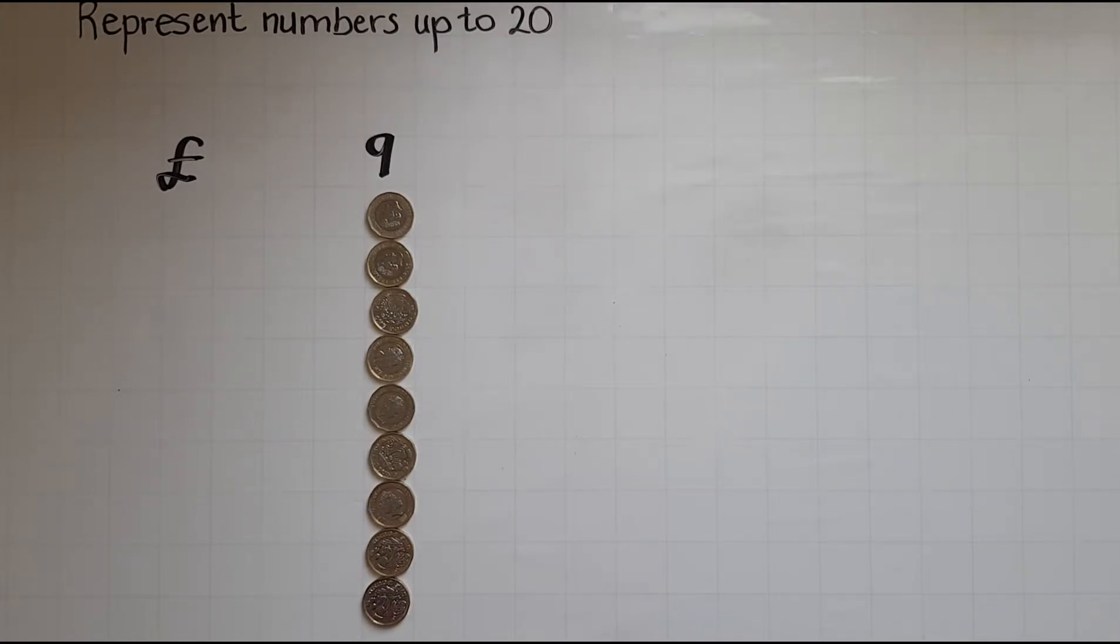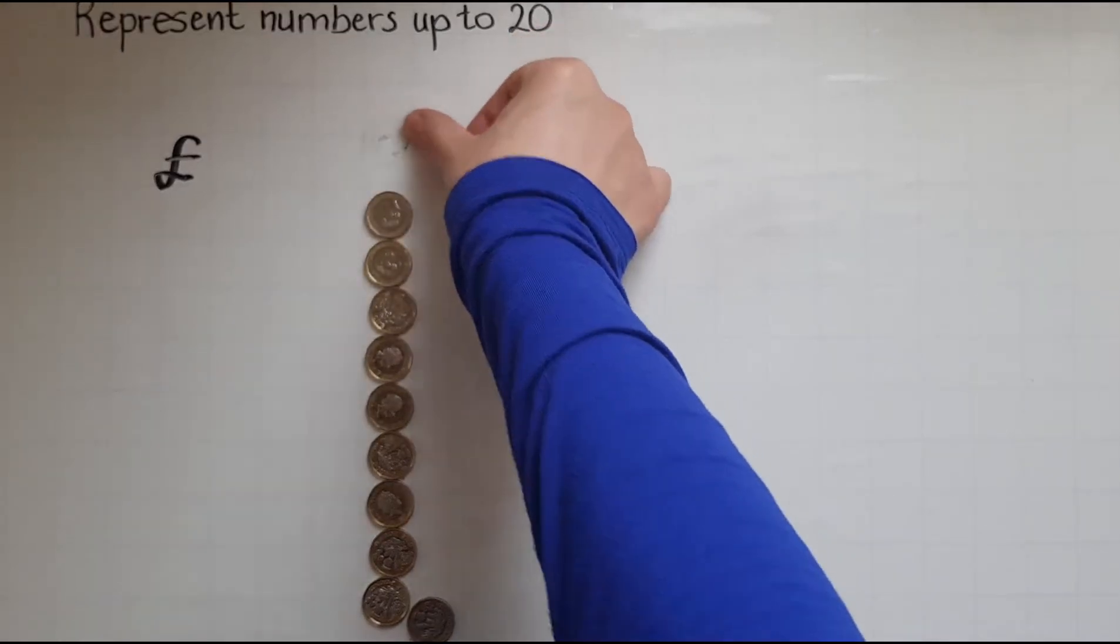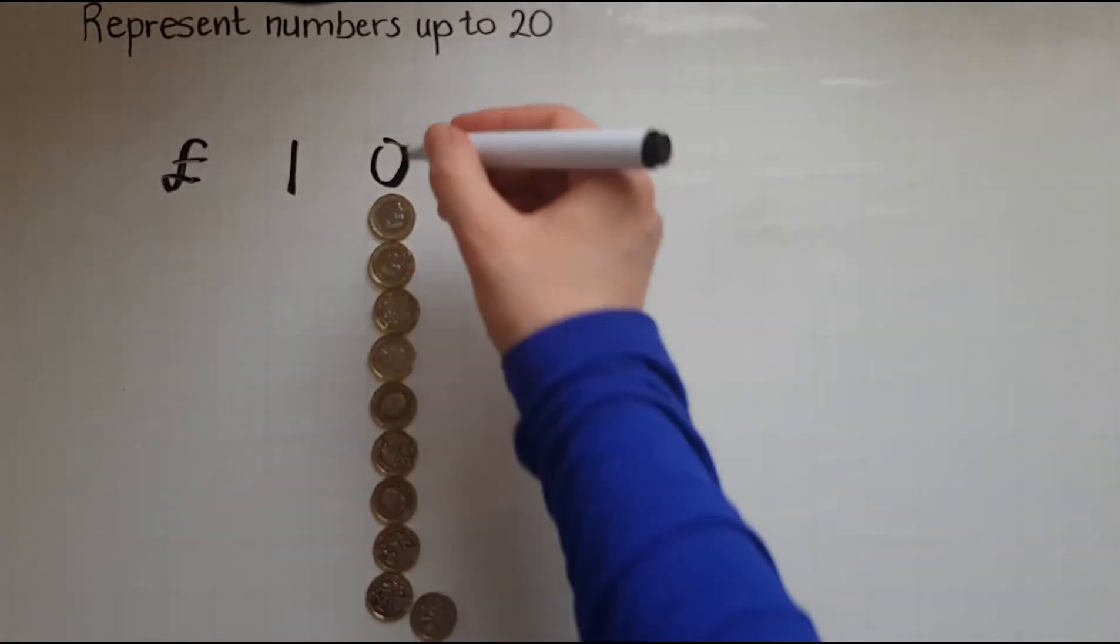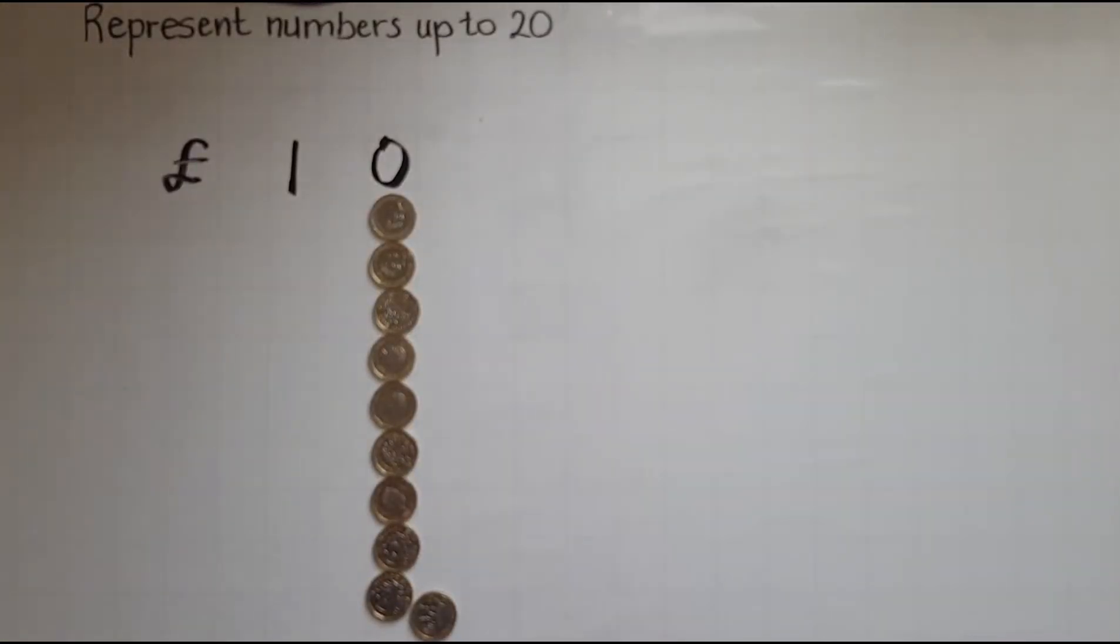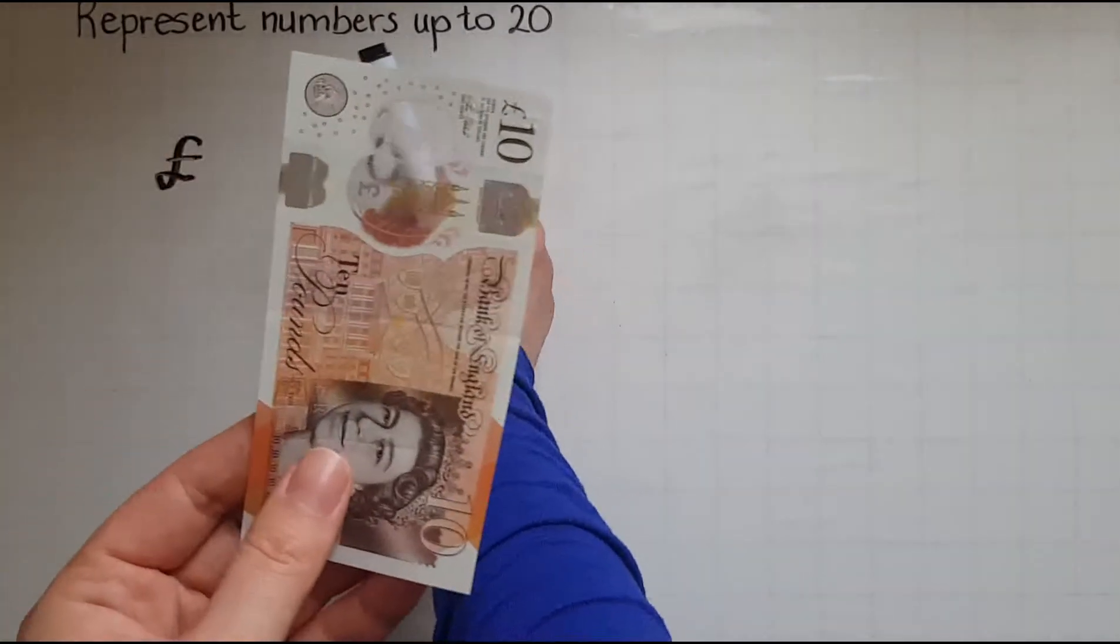If I have ten pounds, which is what I have now, how would I write this? What would I do? I would put them together, collect them together and exchange them for a ten pound note. So I will write the amount as ten.